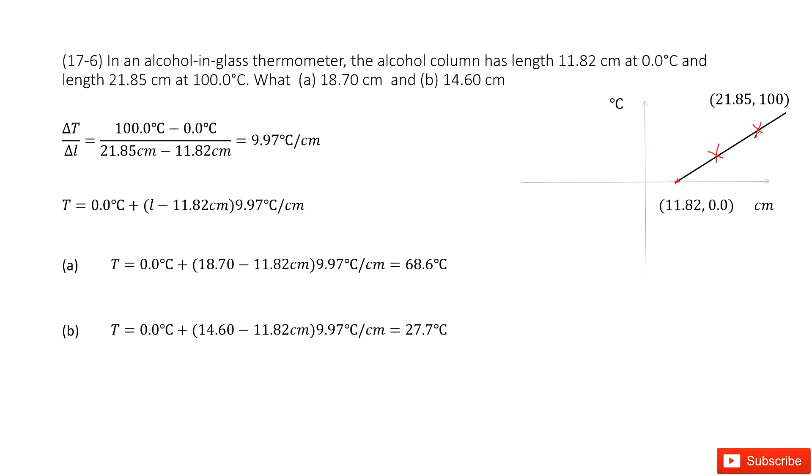So for this one, we can find a function to describe this linear relationship between temperature and alcohol column length. First, we can get the slope.